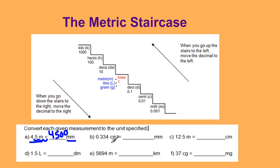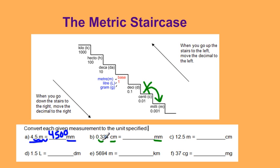Going from centimeters to millimeters. This time I'm not starting on the base stair — I'm starting on the centimeter stair and I'm moving down to millimeters. Because I'm moving down one stair, that means I'm moving the decimal one place to the right, which is actually leaving me with 3.34 millimeters.